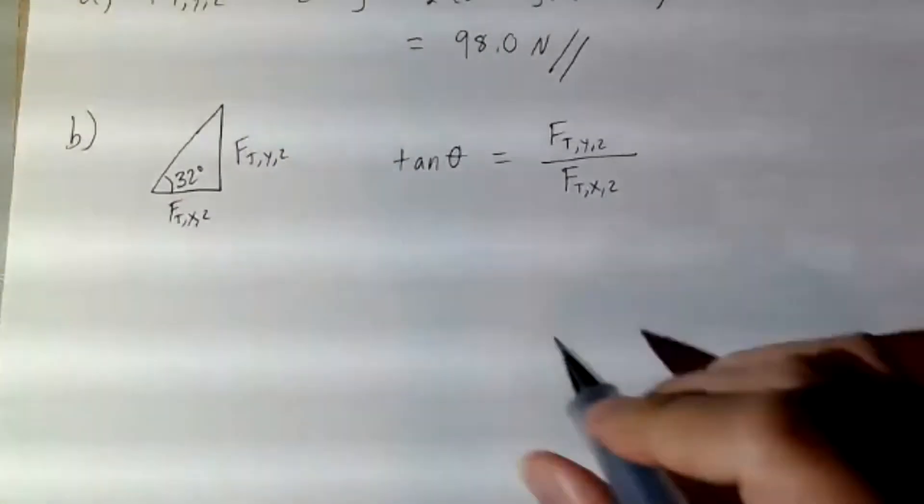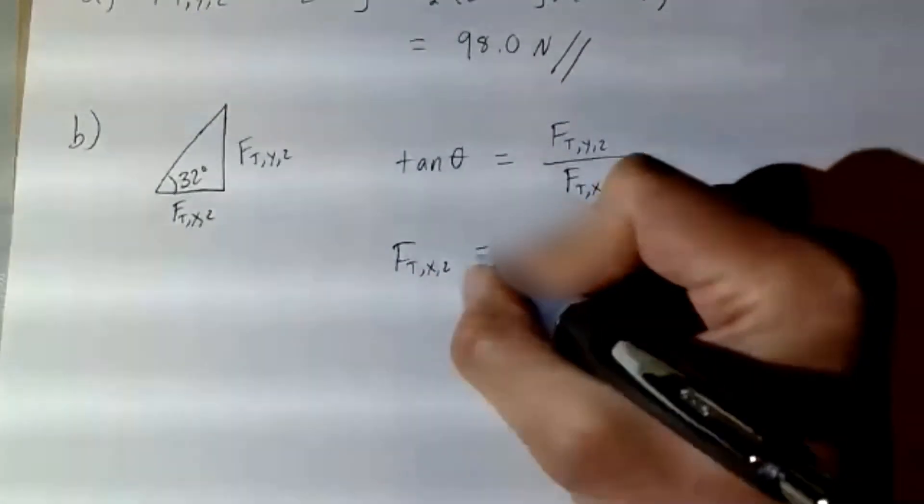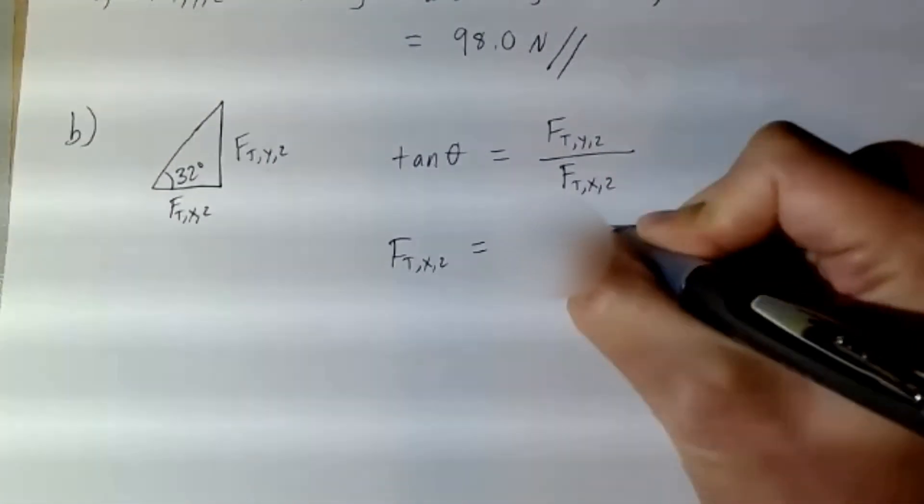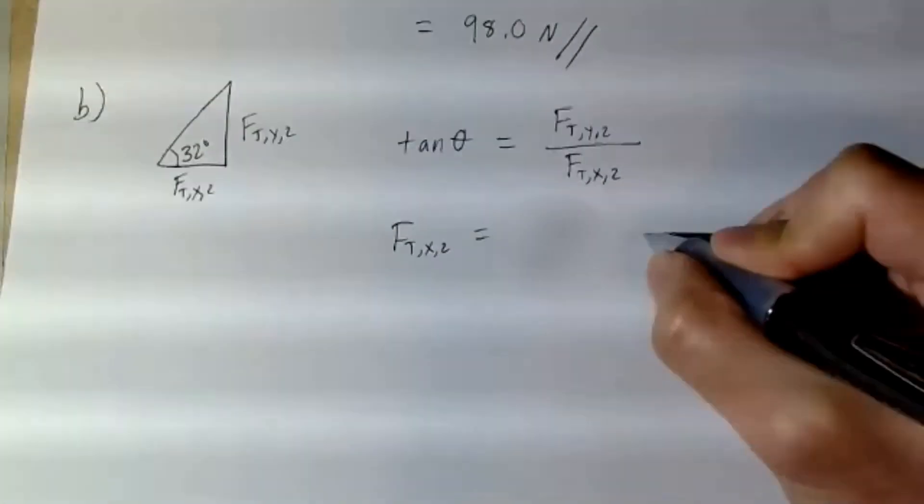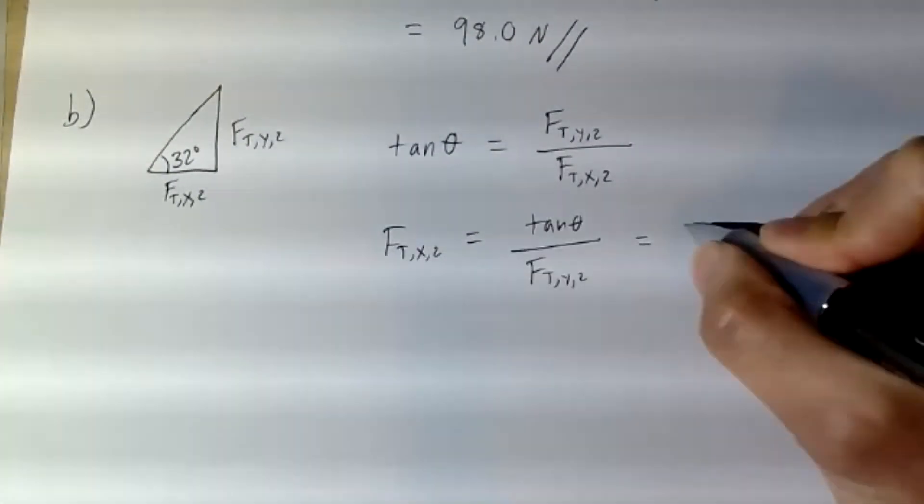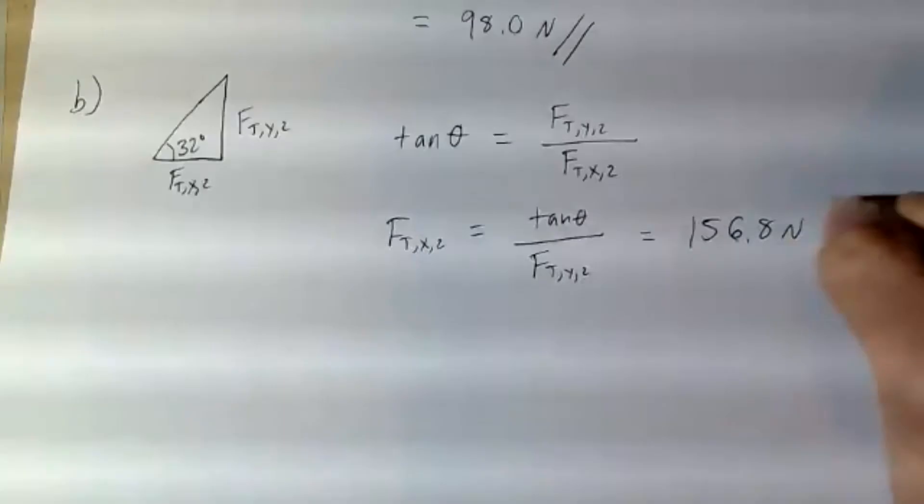And what you can do from there is you can find the force tension x of the second rope being tan theta divided by force tension y of the second rope to equal 156.8 newtons.